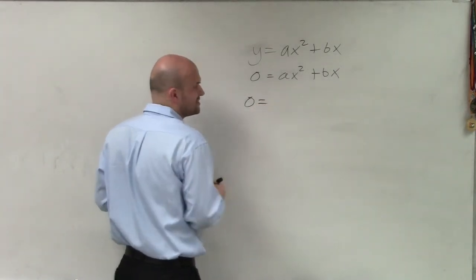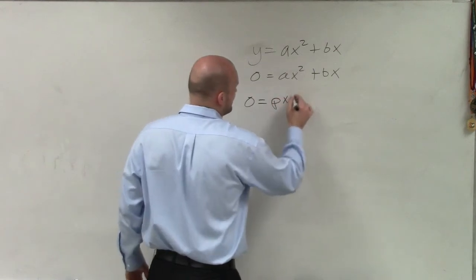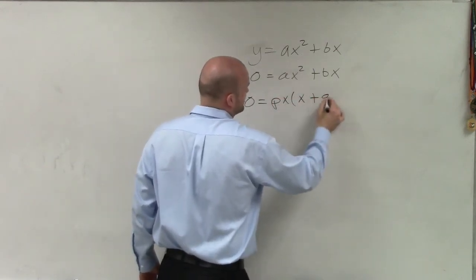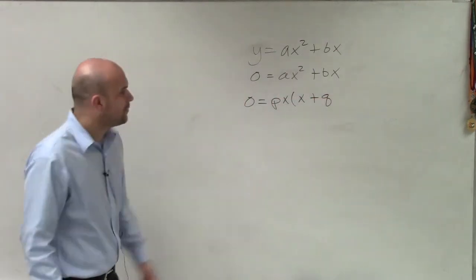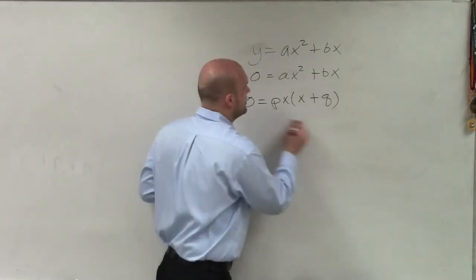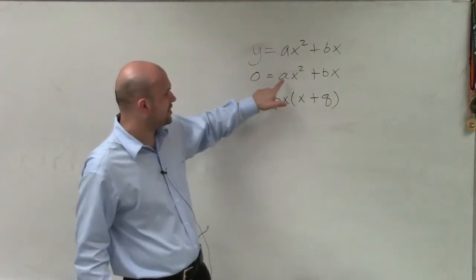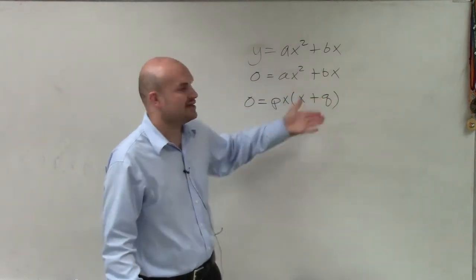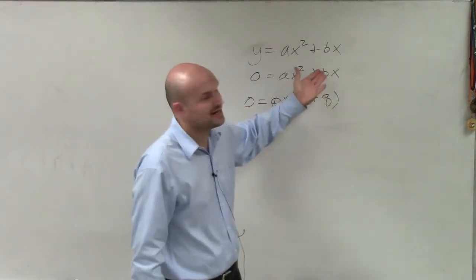And usually we're going to have an expression that's going to look something like this, px times x plus q, where p is going to be a common factor of a and of b. And then q would be your other factor of b.